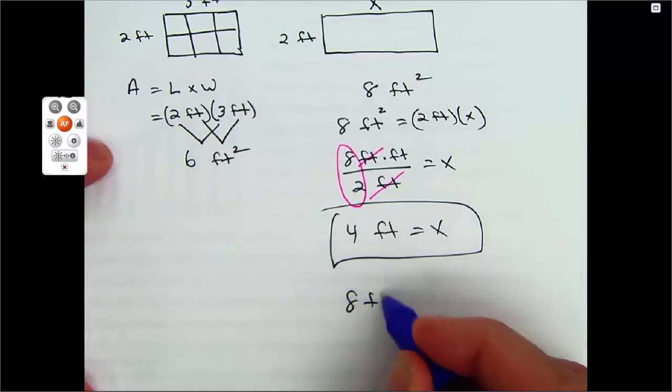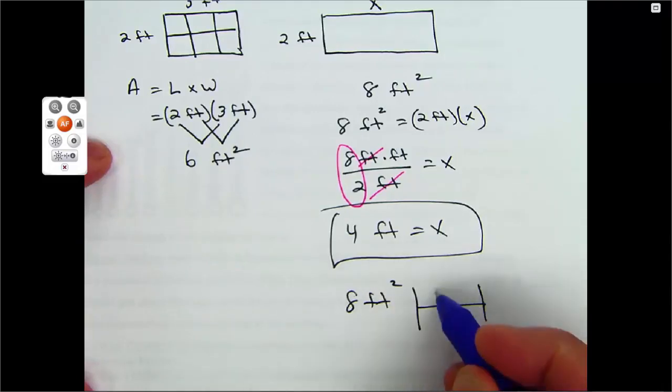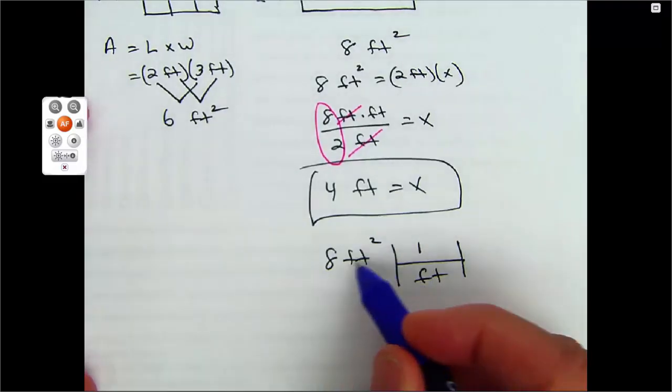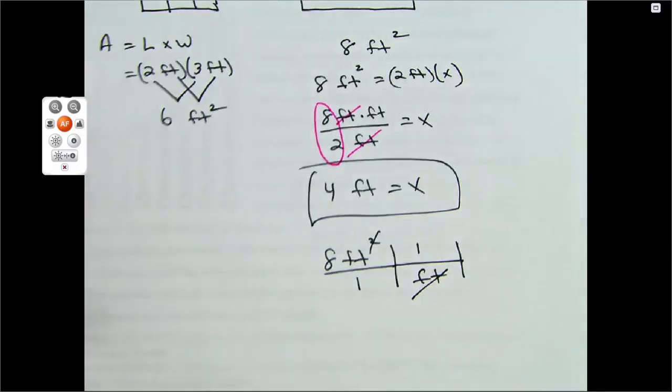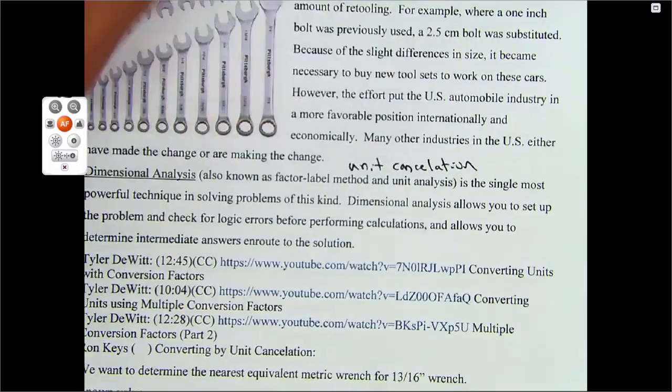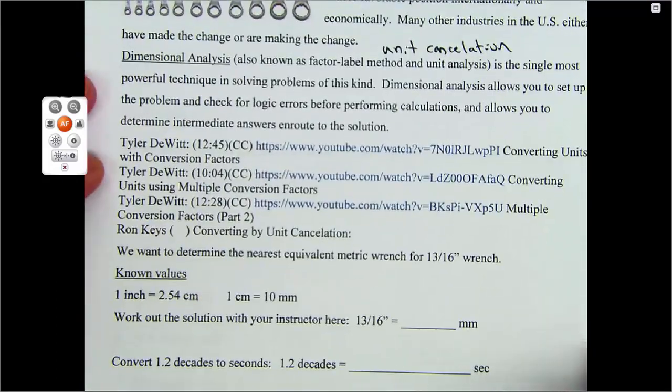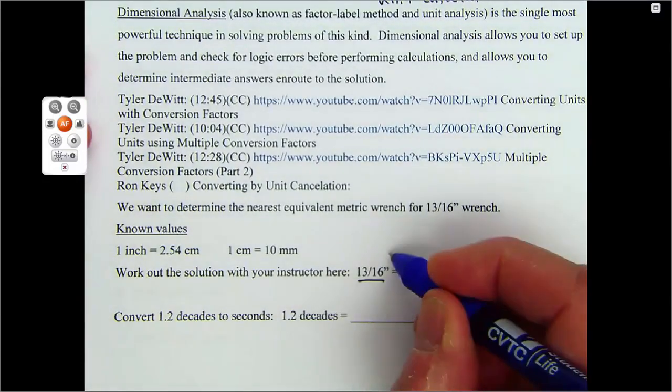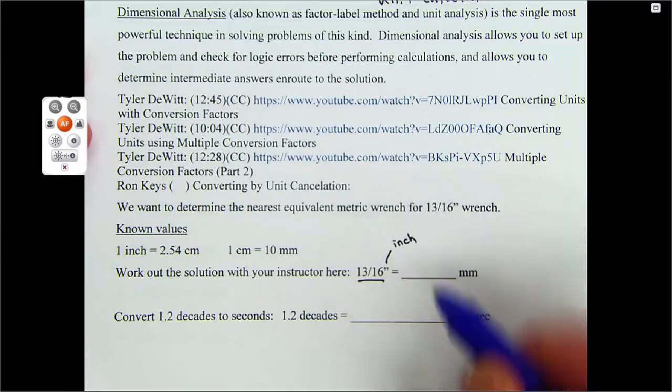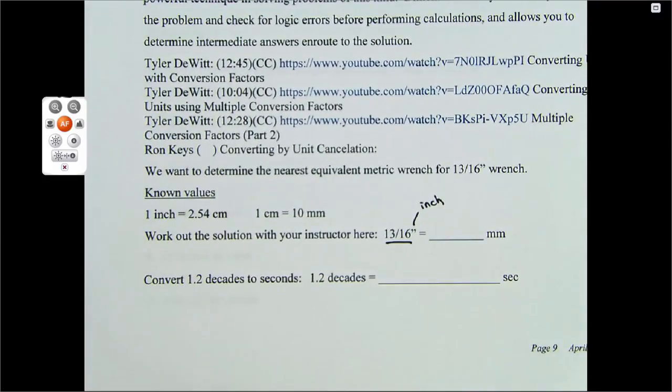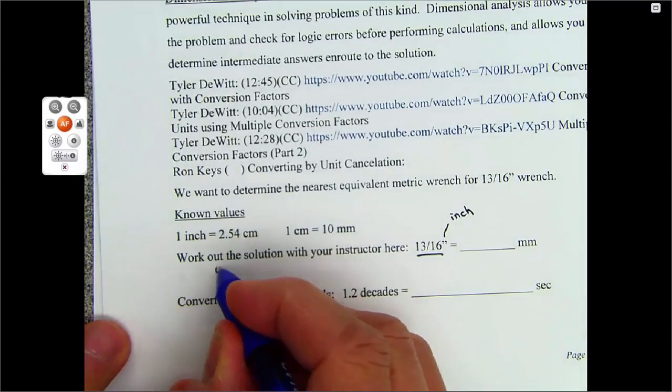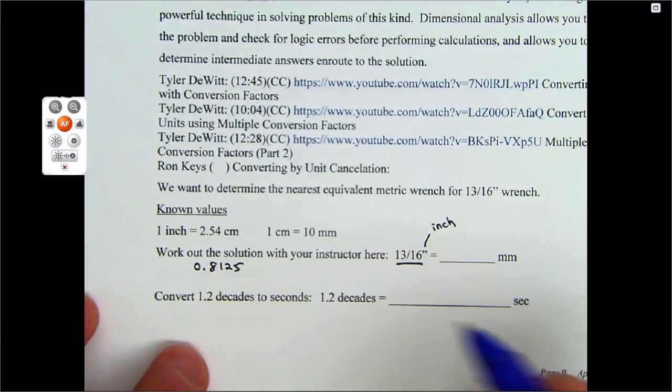As long as you have a unit in the numerator, it will cancel out with a unit in the denominator. That's what we're going to do right now, unit cancellation, factor label, unit analysis. Here's an example: 13 sixteenths inch wrench equals how many millimeters? The first thing you should do is put that 13 sixteenths in decimal. So 13 divided by 16, this is 0.8125 inches.